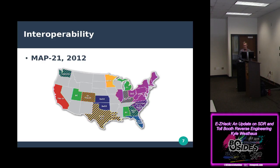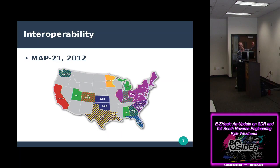The toll booth world is changing protocols. In 2012, President Obama signed the Moving Ahead Progress Act, which essentially required toll booth companies to move toward national interoperability — so all parts of the nation would support each transponder device. EasyPass is the largest protocol, and as of 2018 there are 35 million transponders in the EasyPass system.